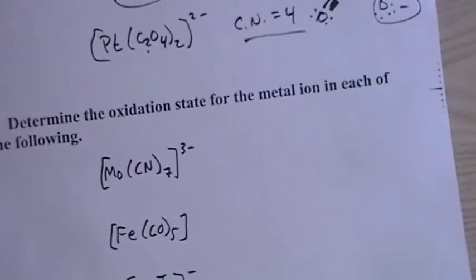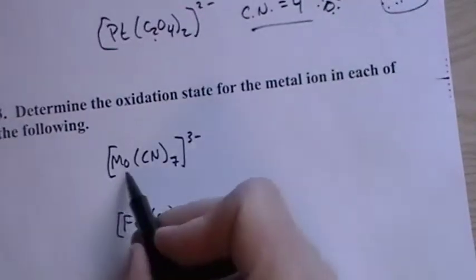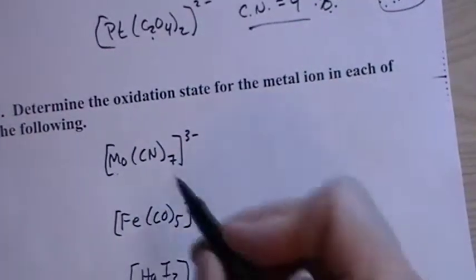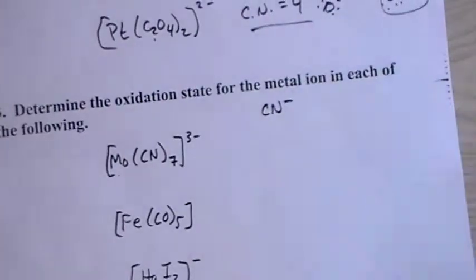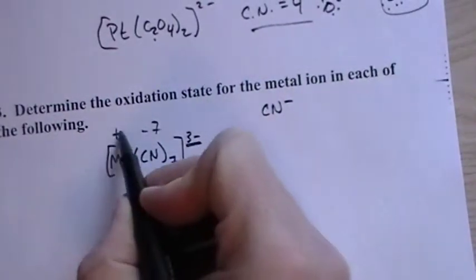Okay, determine the oxidation state for the metal ion in each of the following. So the oxidation state, we just have to figure out what the charge is on each of these central atoms. The cyanide, so this is going to be important to know the charges on the ligands. If you're studying this for the first time, then you don't know them. Or you might know some of them, but you're going to have to know them all. There's really not that many. Most of them are minus one. There are some that are zero, and there's a few that are minus two, and that's about it. So cyanide is minus one. There's a seven here, so that's minus seven. It's a minus three total, so this should be plus four. That's the oxidation state on the molybdenum.